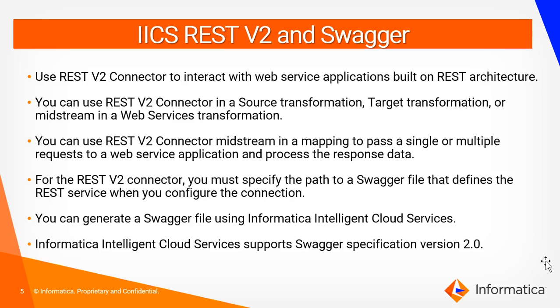Now we'll understand what is the REST V2 connection and the swagger file. Users use this REST V2 connector to interact with web service applications built on REST architecture. Users can use this REST V2 connector in a source transformation, target transformation, or midstream by making use of a web service transformation. We can use this REST V2 connector midstream in a mapping to pass single or multiple requests to the web service application and process the response data. For the REST V2 connector you must specify the path of the swagger file that defines the REST service while configuring the connection.